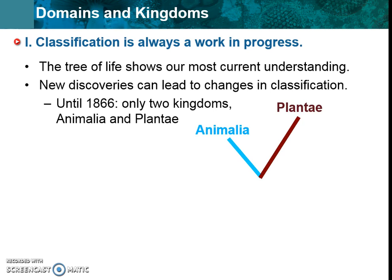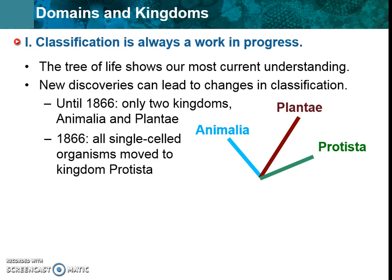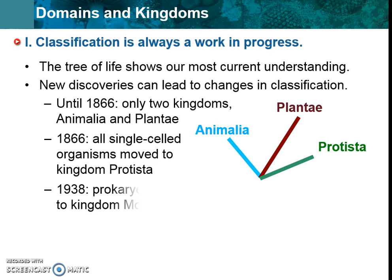For instance, in 1866, right after we were really starting to learn about things and had microscopes, we really only had two kingdoms: animal and plant — animalia and plantae. Everything was only just those two things. But then we started to see that there are things that are not multicellular like animals and plants — they're single-celled. And we made this category called Protista. We know a little bit about Protista now: that they're single-celled. And so we added that category.